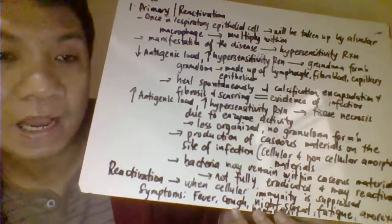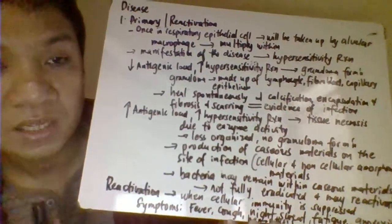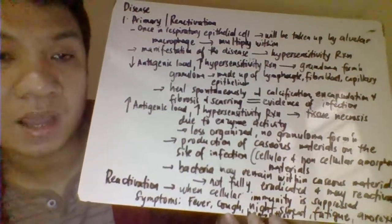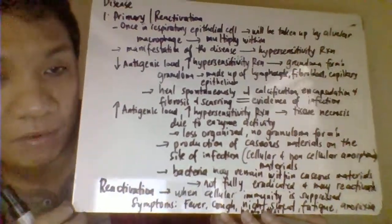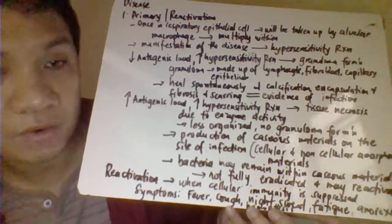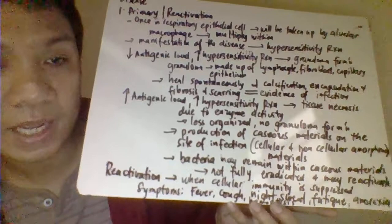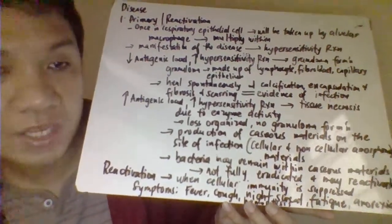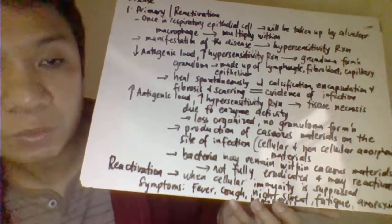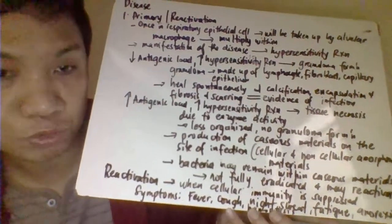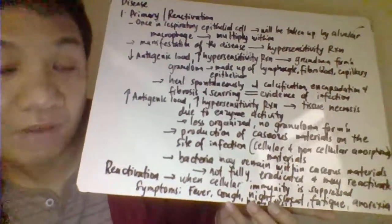The clinical pathology depends on the antigenic load and hypersensitivity reaction. With a low antigenic load and high hypersensitivity, granuloma formation results. Granulomas are made up of lymphocytes, macrophages, and capillary epithelium. After granuloma formation, healing occurs spontaneously through calcification, encapsulation, fibrosis, and scarring — visible on X-ray as scars in the pulmonary tree, indicating past infection.